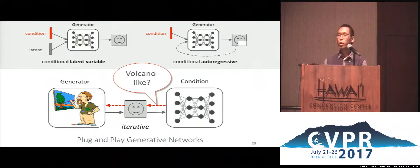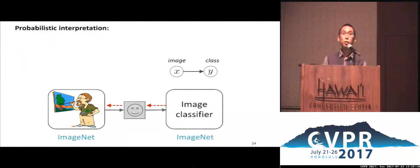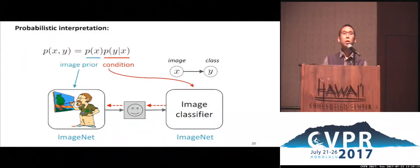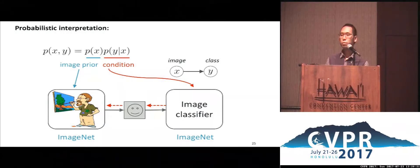Let's say we want to condition on one single class — then the condition network would be an image classifier. We then sample from the joint model of image and class, which naturally decomposes into an image prior and a conditional model.